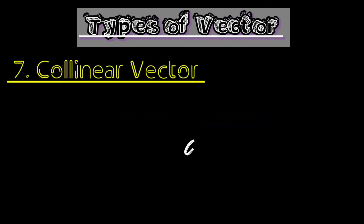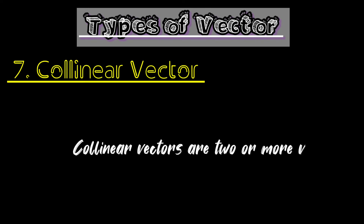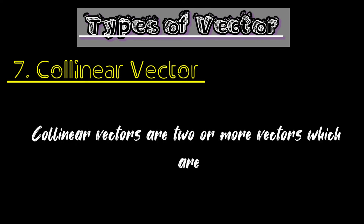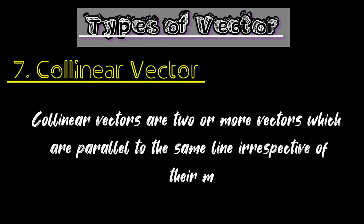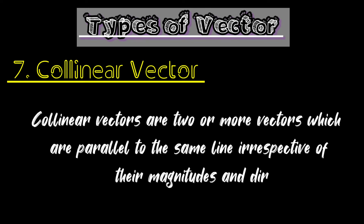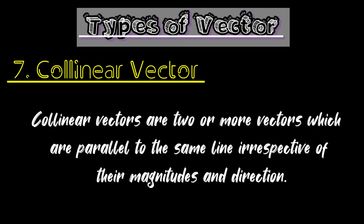Collinear vectors: collinear vectors are two or more vectors which are parallel to the same line, irrespective of their magnitudes and direction.